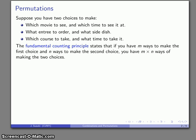The starting point of Combinatorics is the fundamental counting principle. Suppose I have m ways of making the first choice and n ways of making the second choice. Then I have a total of m times n ways of making the two choices.